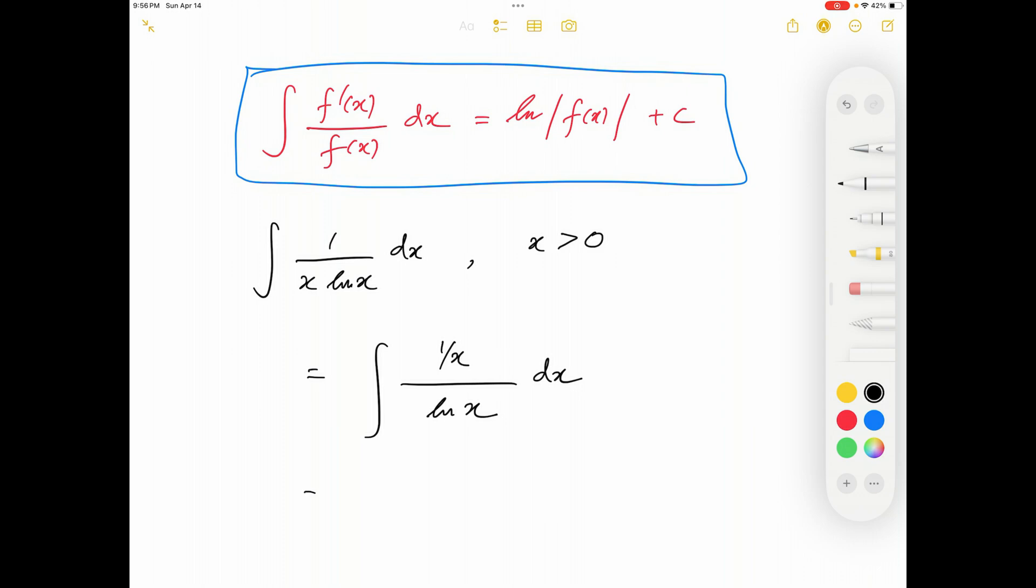Now I can see that ln x can be considered as the function f(x). If I consider that as the function f(x), we know the derivative f'(x) is 1 over x.